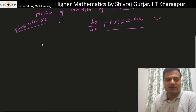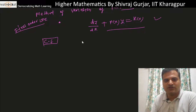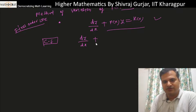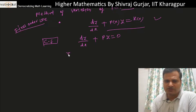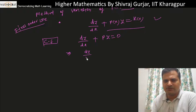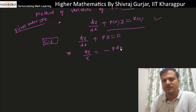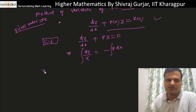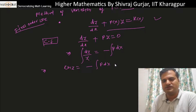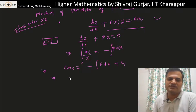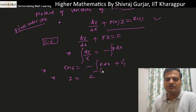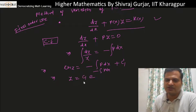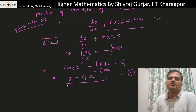First, let us find the complementary function corresponding to dy/dx + P·y = 0. This is in variable separable form, so dy/y = −P dx. Integrating both sides: ln y = −∫P dx + c₁, so y = c₁ · e^(−∫P dx). This is the complementary function.